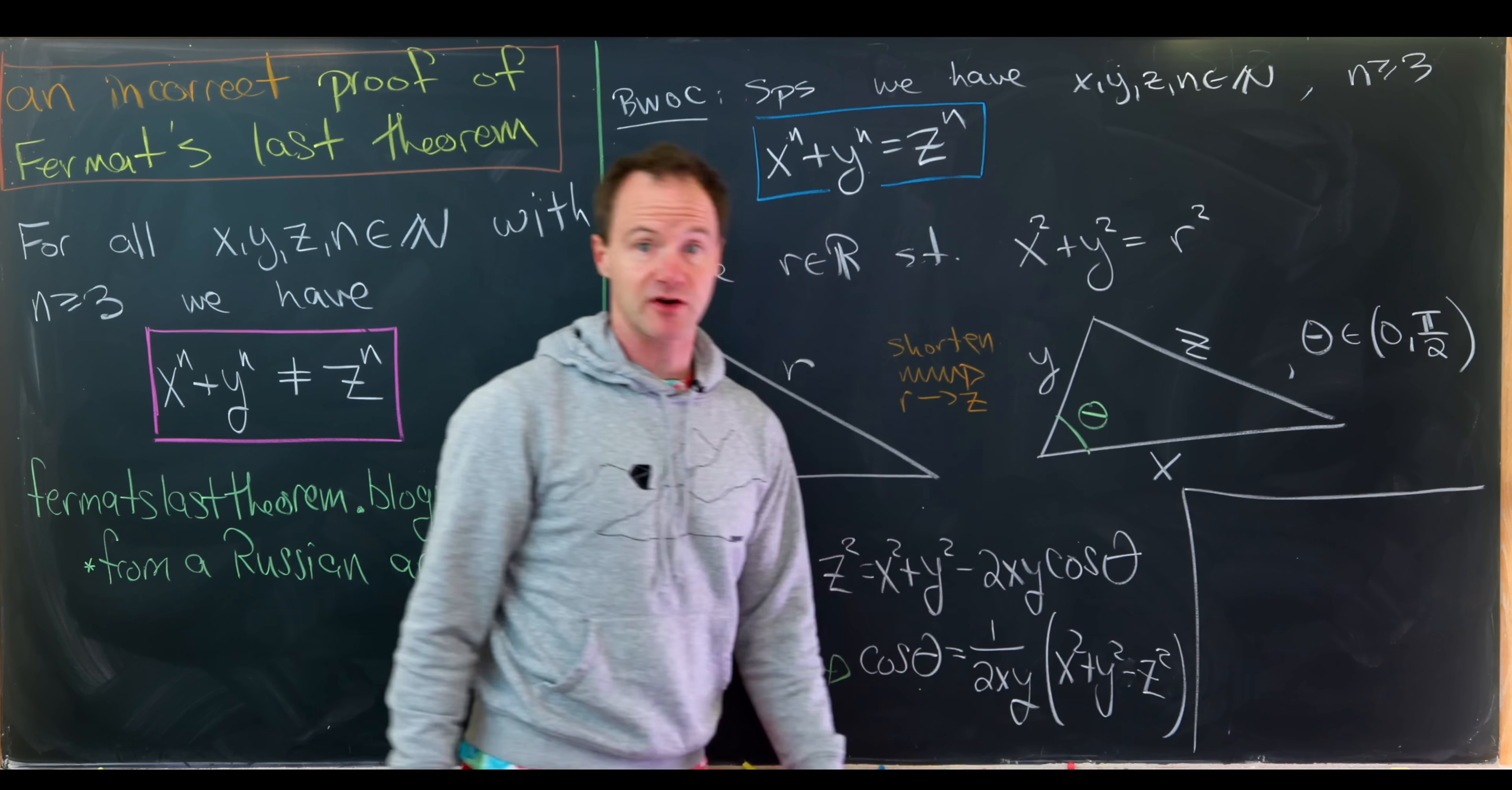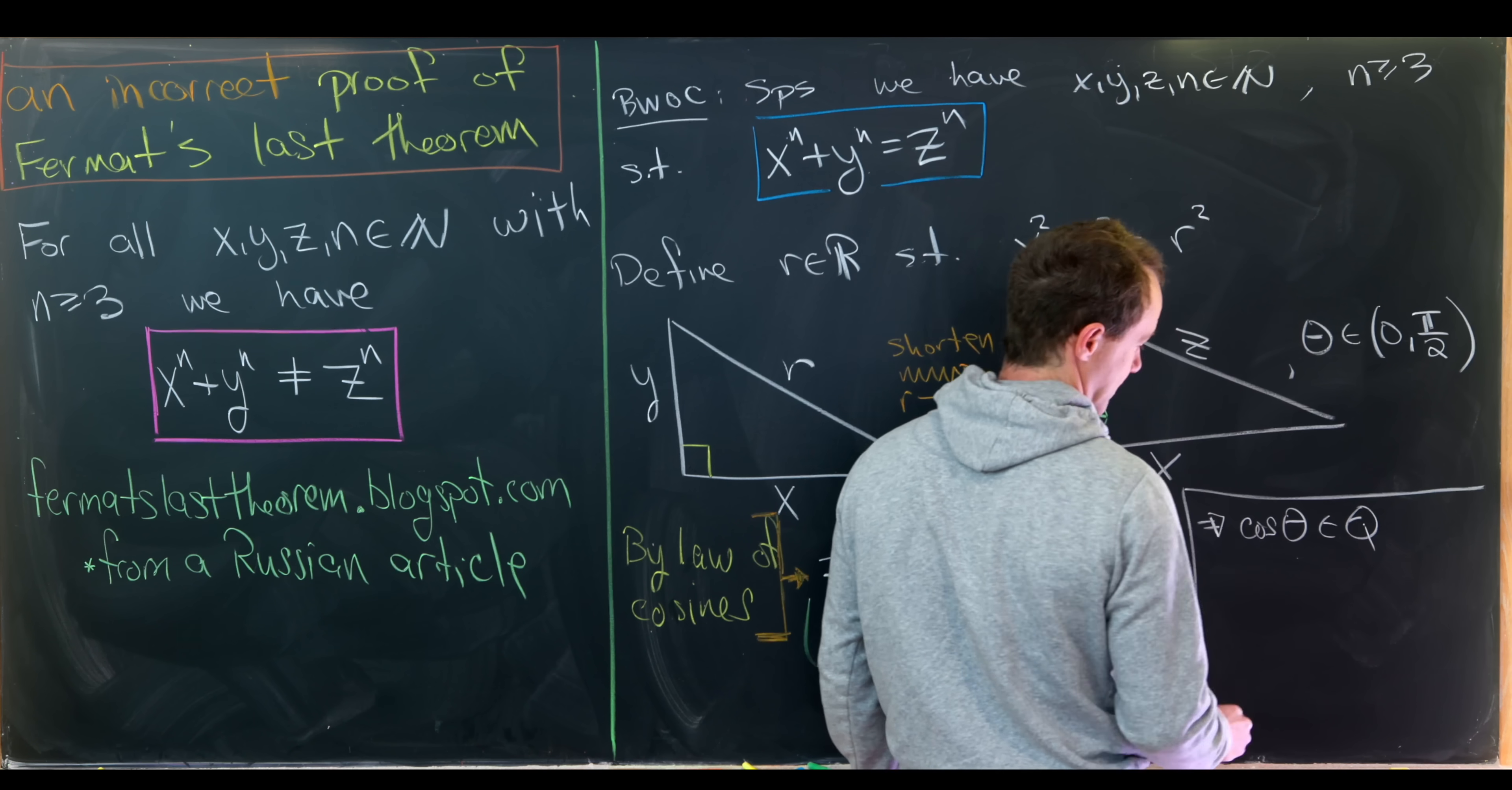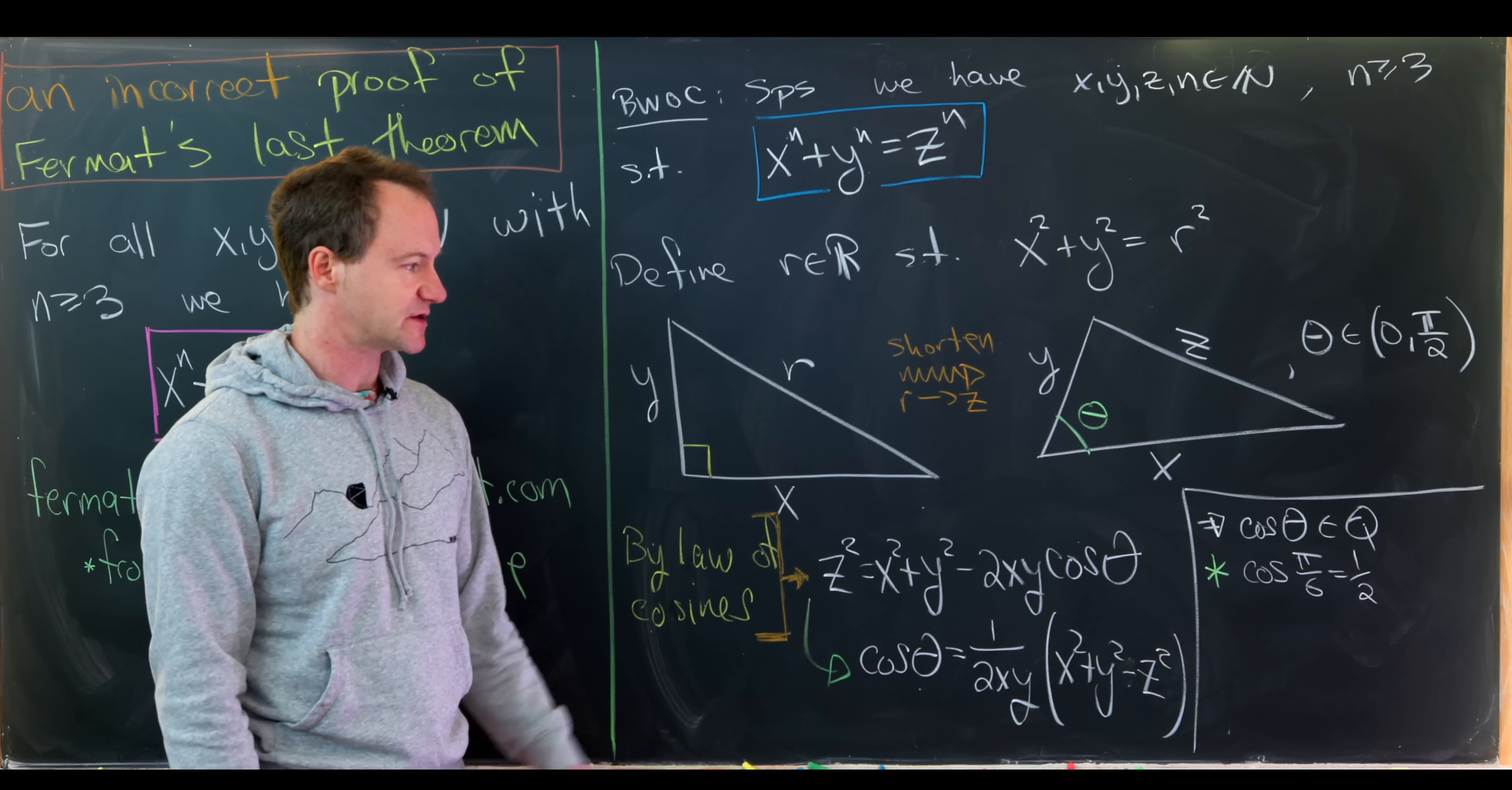And this is where the author tells us that we found a contradiction. So notice what we have built is a value of cosine which is rational. That's because this is a rational combination of integers. So just to say we've ended up with cosine of theta is a rational number. And the author says that this is a contradiction. But of course it's not a contradiction because cosine is allowed to be rational for sure. So in fact, cosine of pi over 6 is equal to 1 half. And that's a rational number. You could imagine that the angle of pi over 6 would make this work.